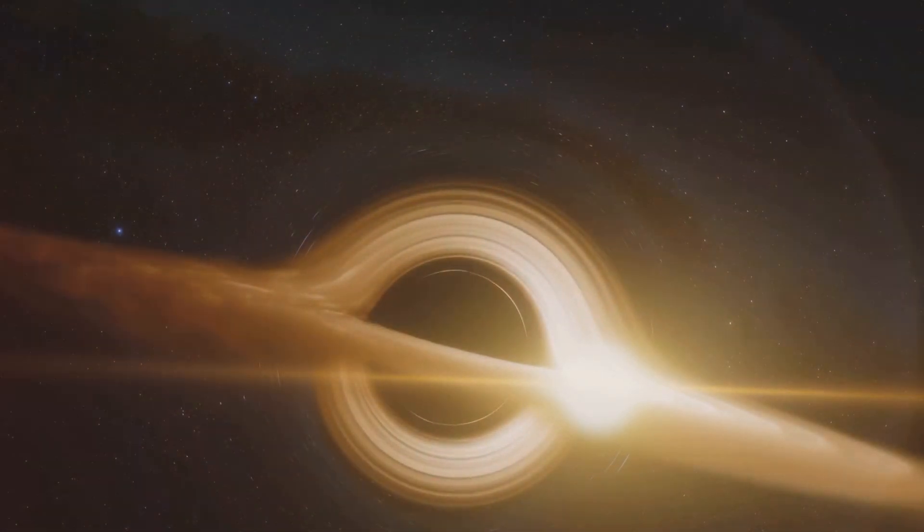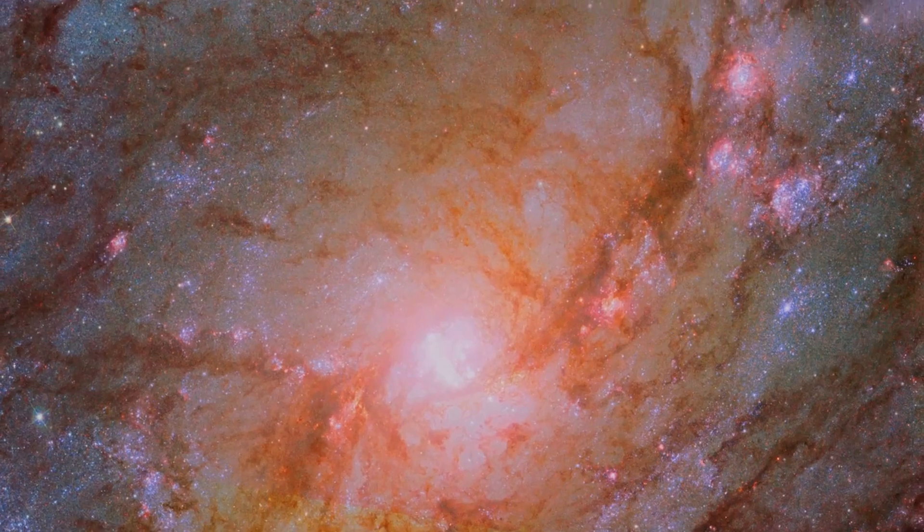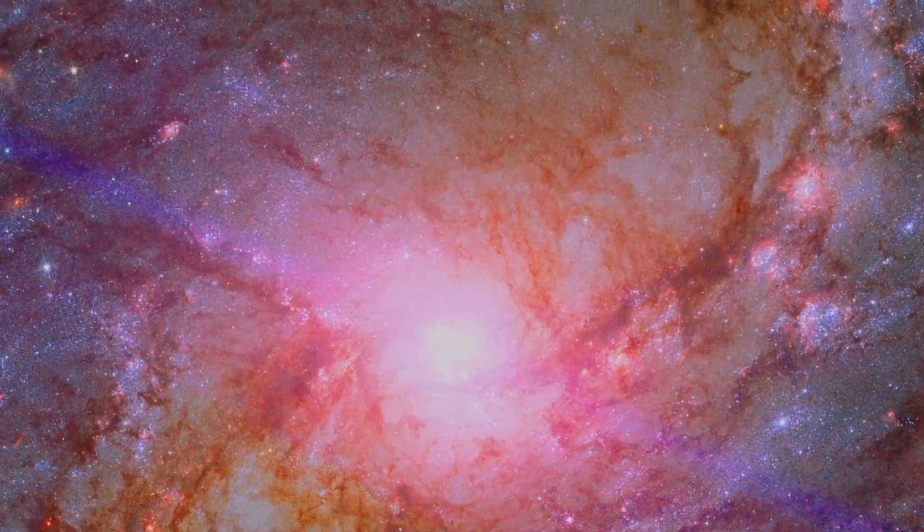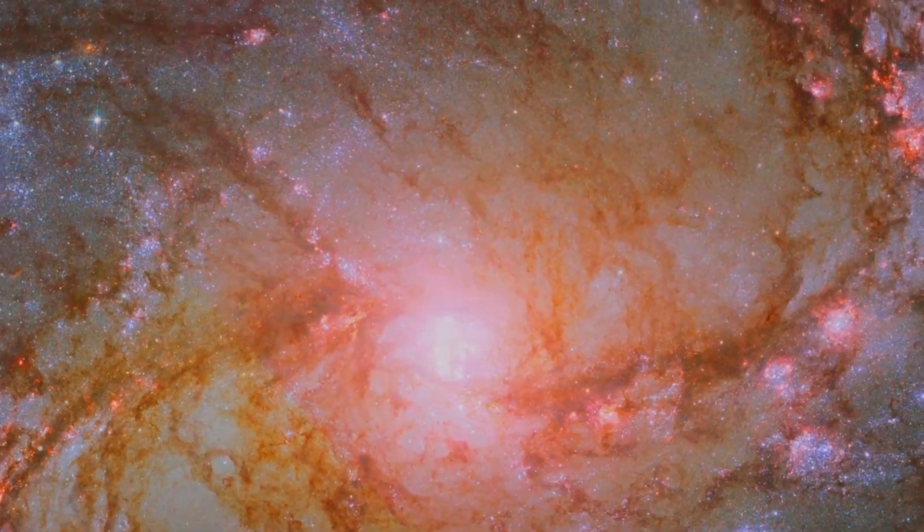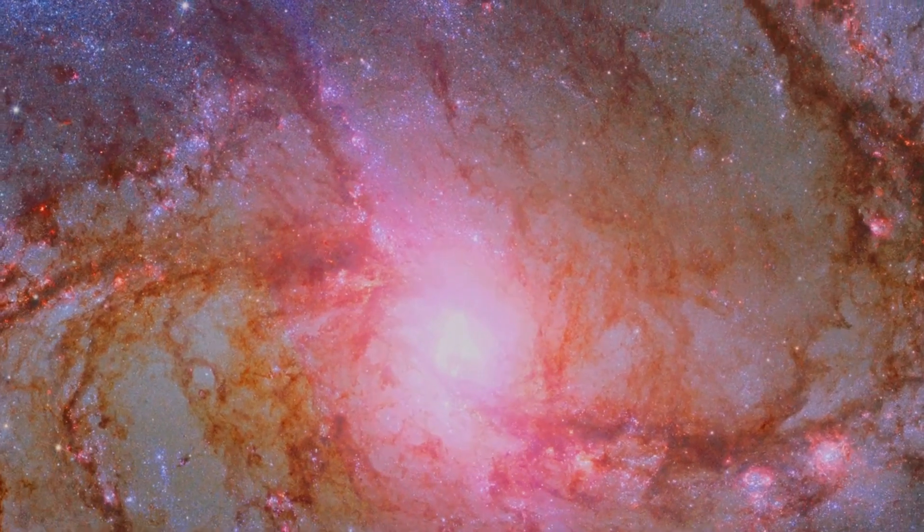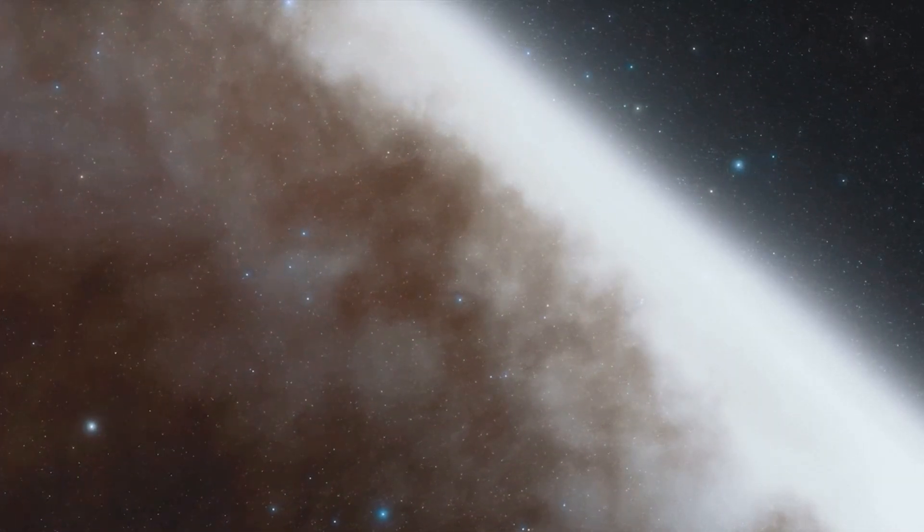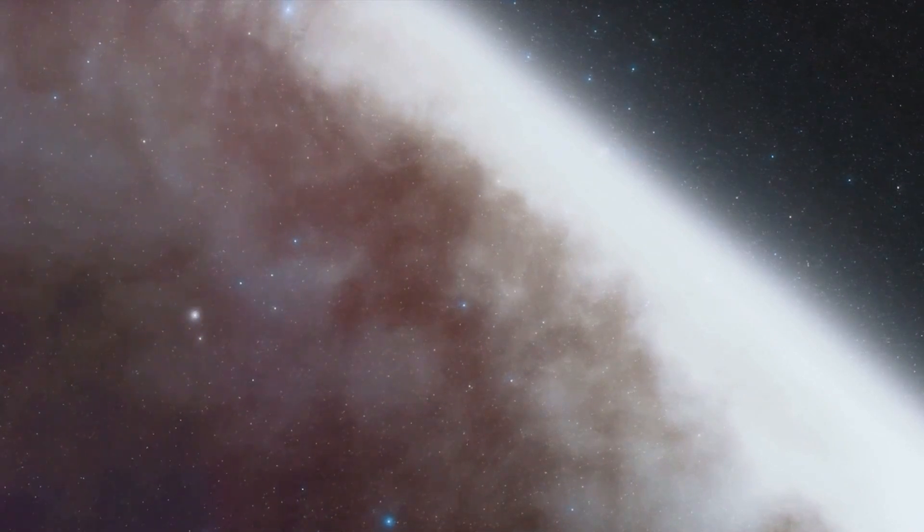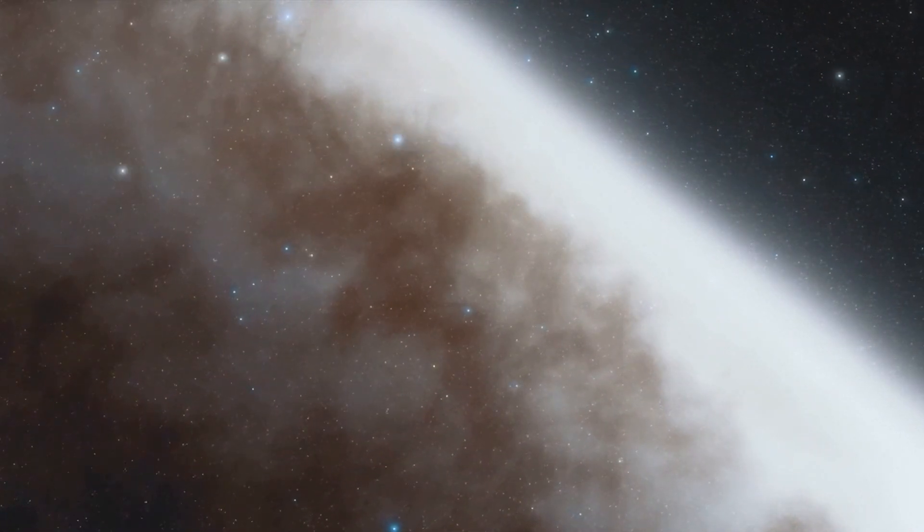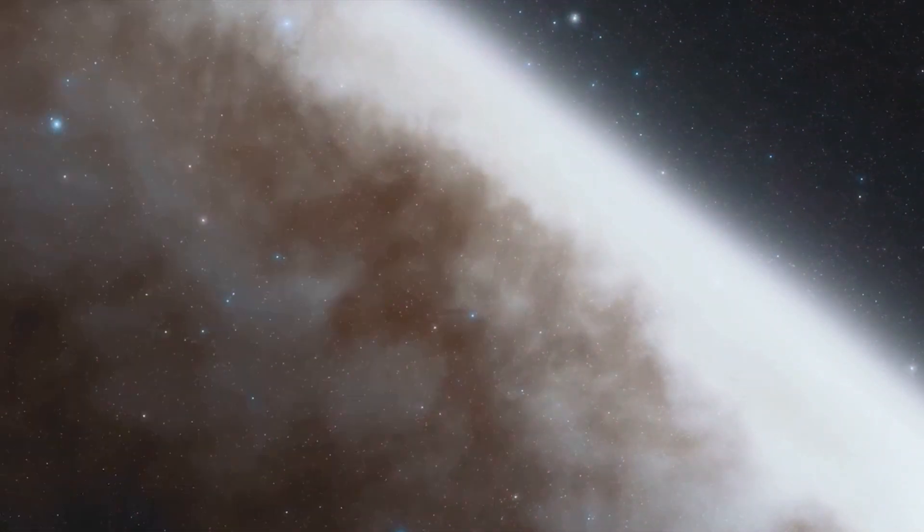Named Sagittarius A*, this cosmic behemoth weighs in at four million times the mass of our sun. It's a place where the fabric of space and time twists and turns, a vortex of such intense gravity that it devours everything in its path. This supermassive black hole isn't just an exotic object. It's the engine that drives our galaxy, the cosmic anchor around which the entire Milky Way revolves. It is the heart of our celestial home, a place of darkness and mystery, yet also a symbol of the incredible complexity and beauty of the universe.